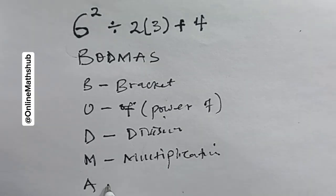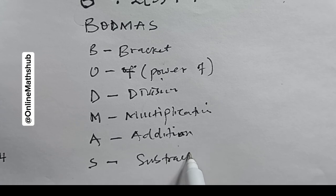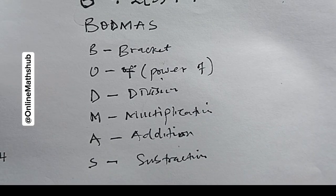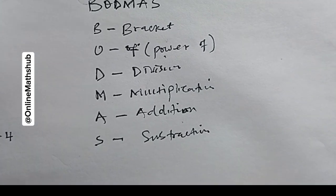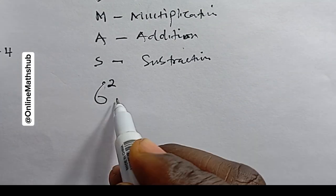M is Multiplication, A is Addition, and S is Subtraction. This is a rule that guides you on which operation to perform first. In the question we have here, you can see there are...